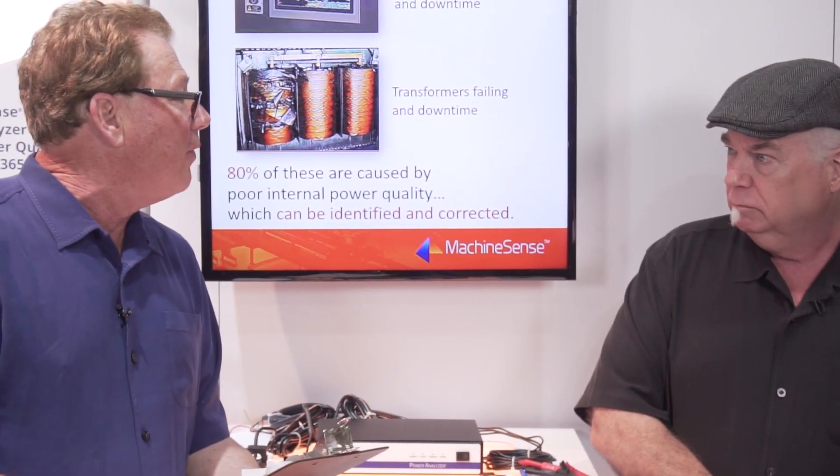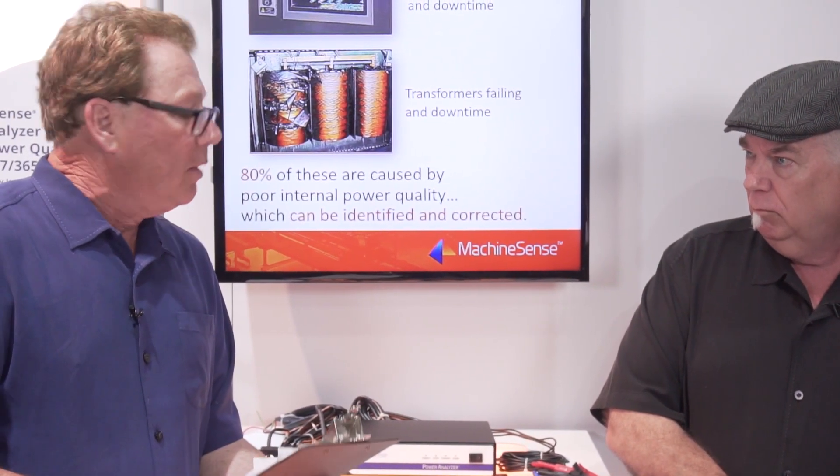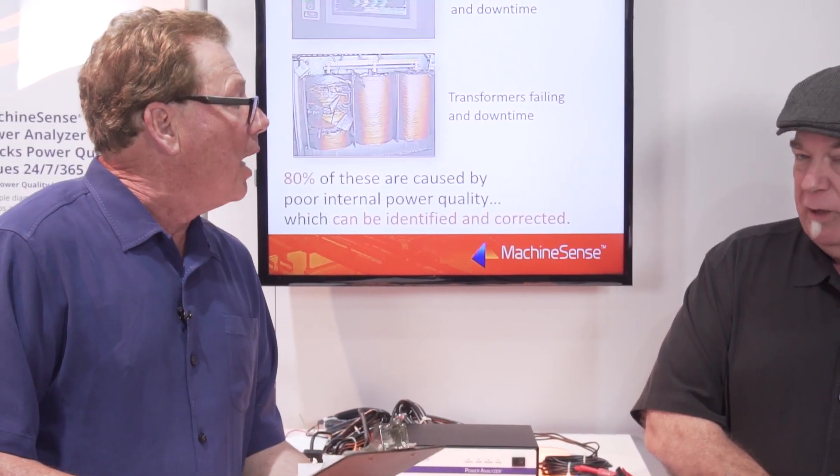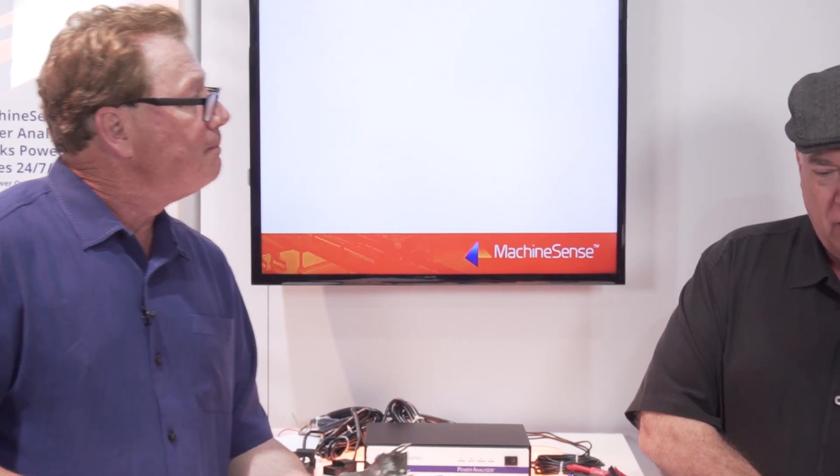Final question, Doc — how do people order this and find out about it? Is it through the Novatec reps or online? Novatec reps. You go to Machinesense.com and look in there. You can find me — my email is rialw@novatec.com. Let me know and I'll take care of you.